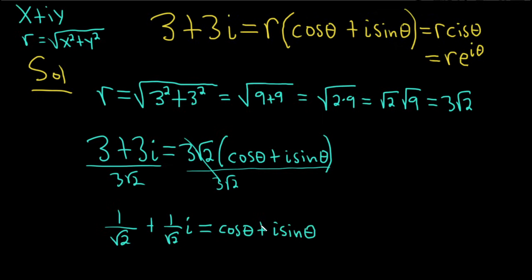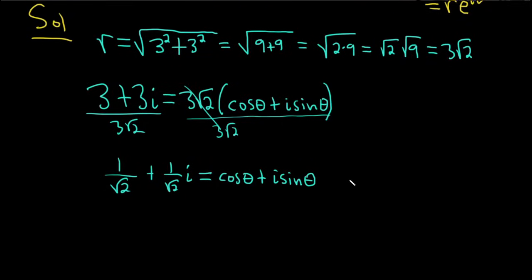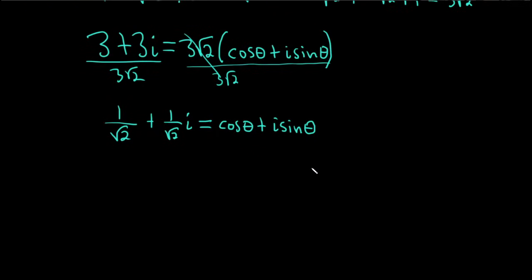And here's the part I think is cool. So now you can use the definition of equality for complex numbers. Two complex numbers are equal only when their real parts and imaginary parts are equal. So that would mean that the cosine of theta is equal to this. And the sine of theta is equal to this.